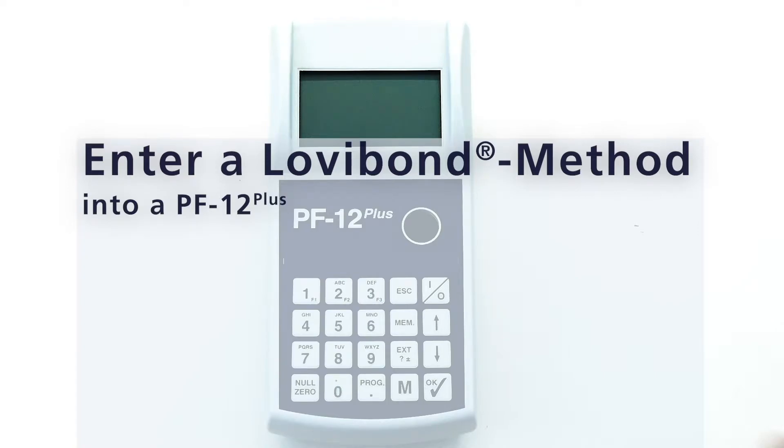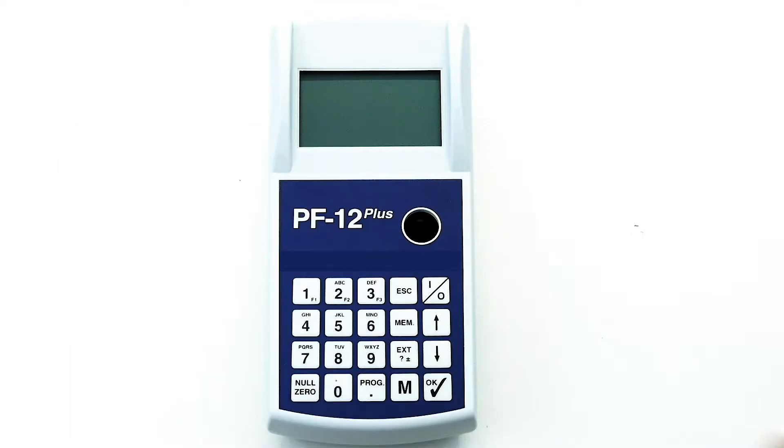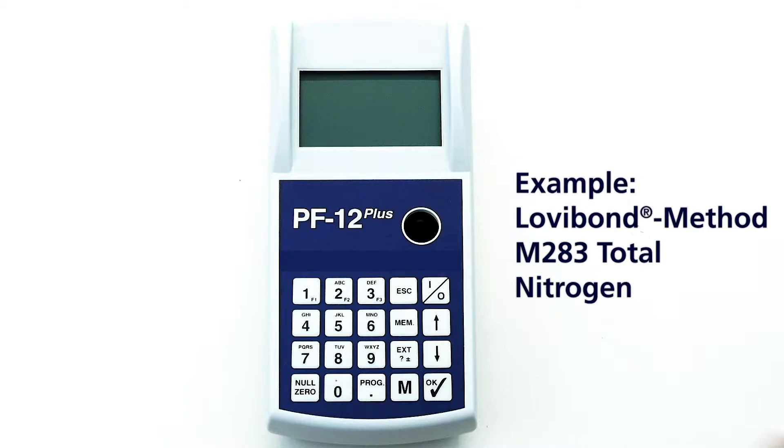Hello, I am here to guide you how you can enter a Lovibond method into a PF12 plus photometer. We will take Lovibond method 283 for total nitrogen as an example.